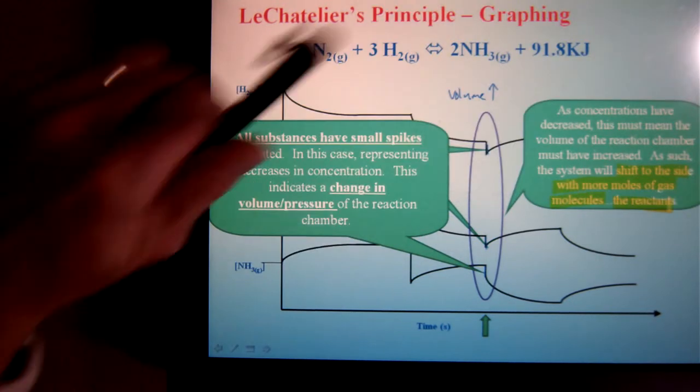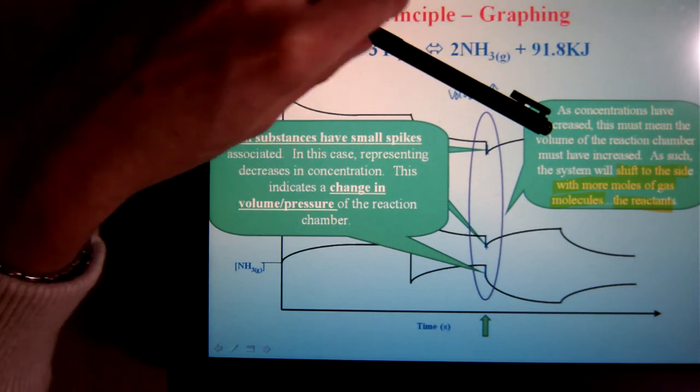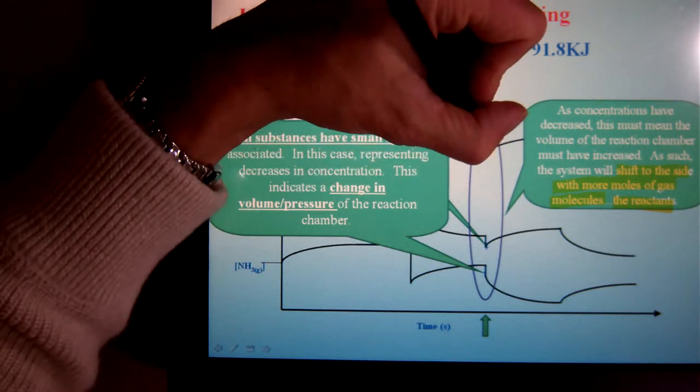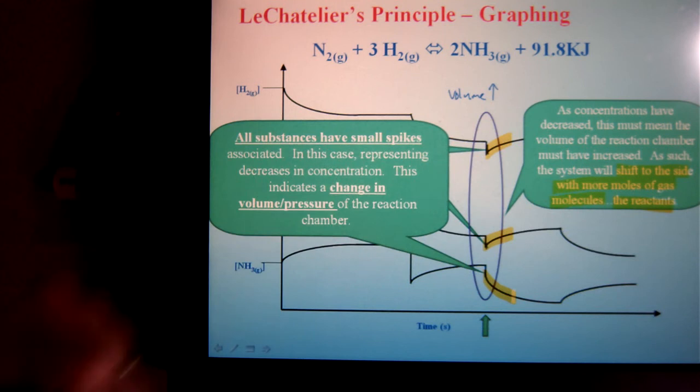Which in this case is the reactants. Again, I could verify that. If I think I should have shifted the reactants, that means I should have more N2 and H2. Which I do, they've both gone back up. And the ammonia has gone down.